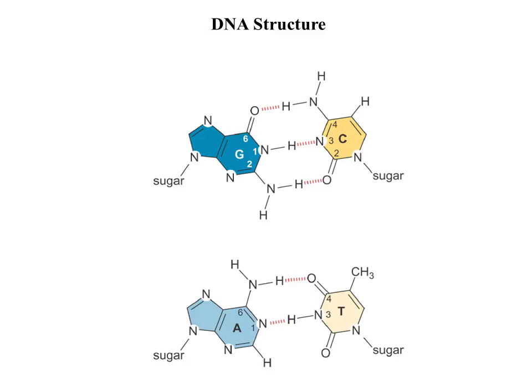Guanine and cytosine — G and C — are paired through three hydrogen bonds, while adenine and thymine are paired through two hydrogen bonds. The AT bond is conceptually weaker than the GC bond. If we have any DNA that is GC-rich, it's harder to separate the strands from each other. GC DNA is more stable — it's harder to separate.